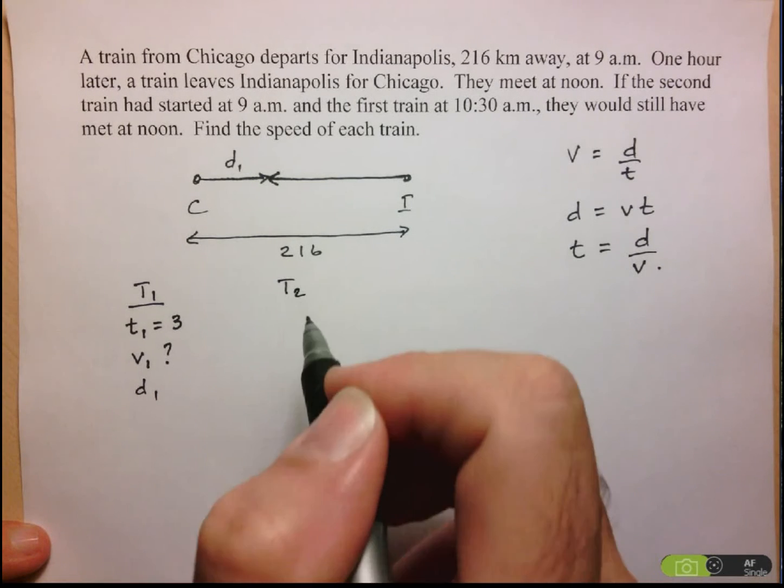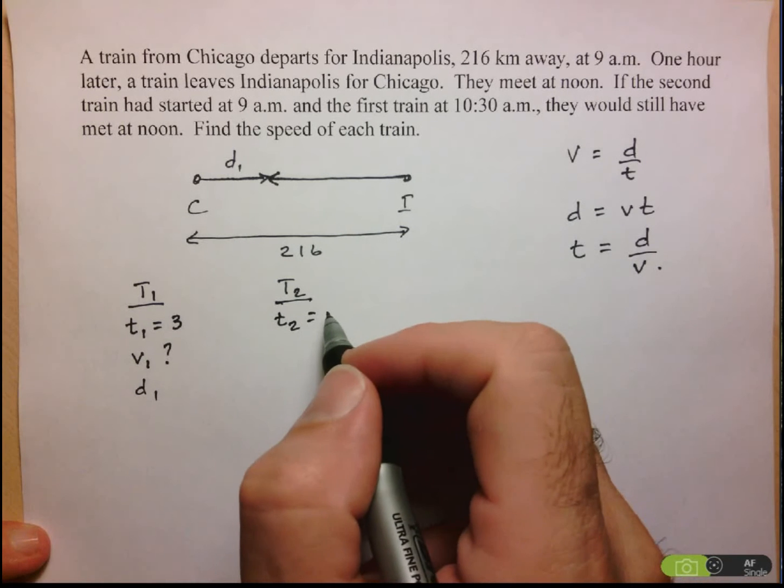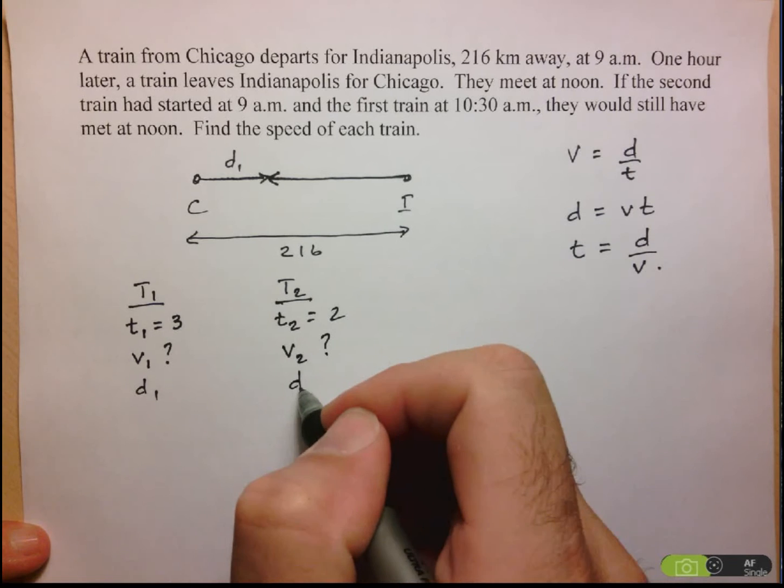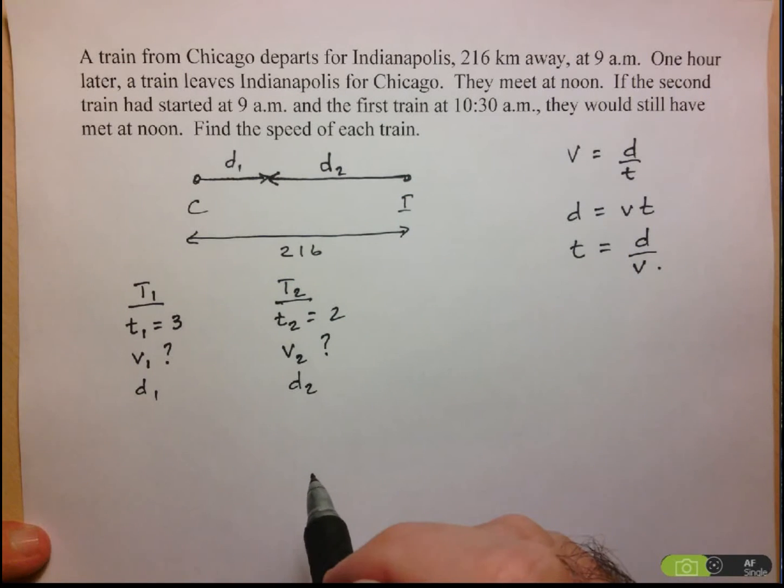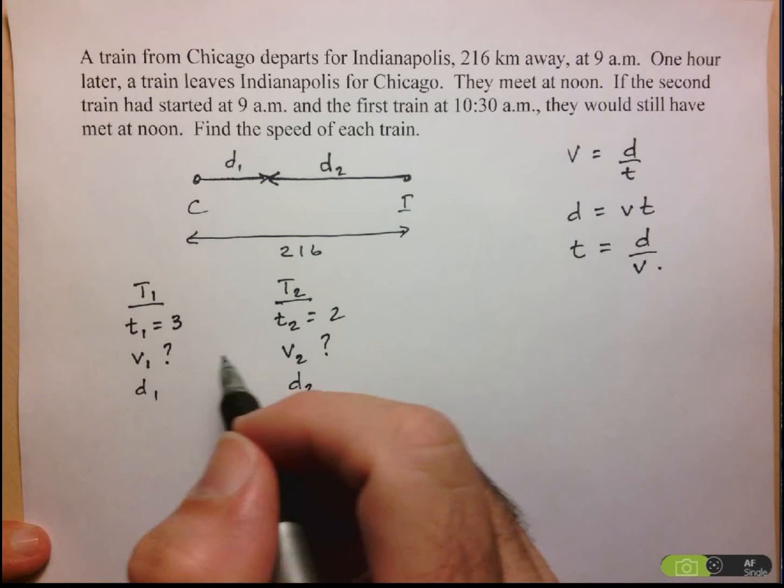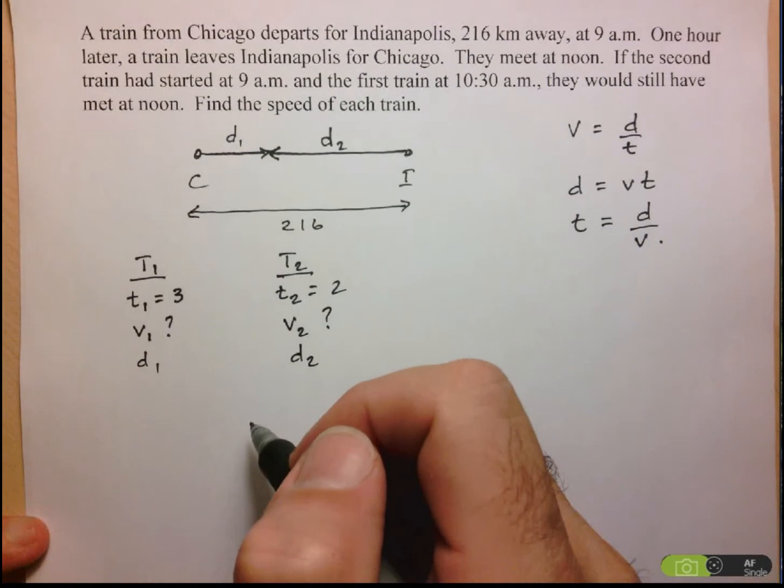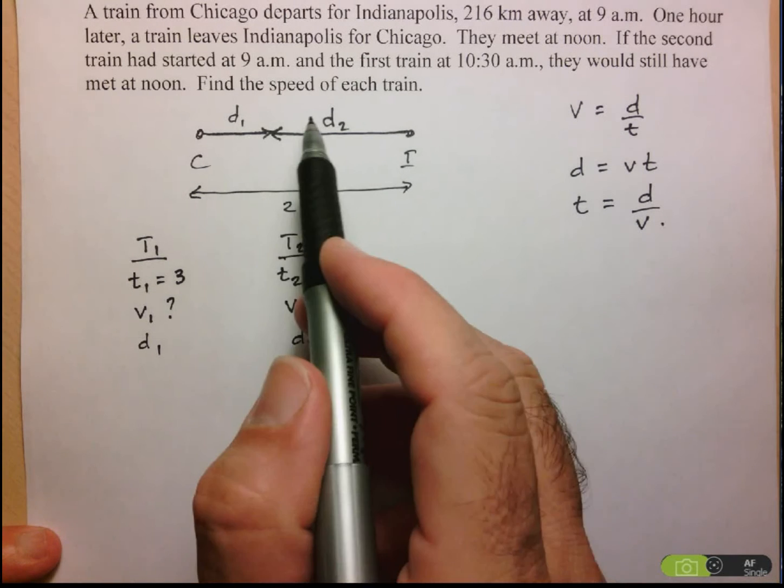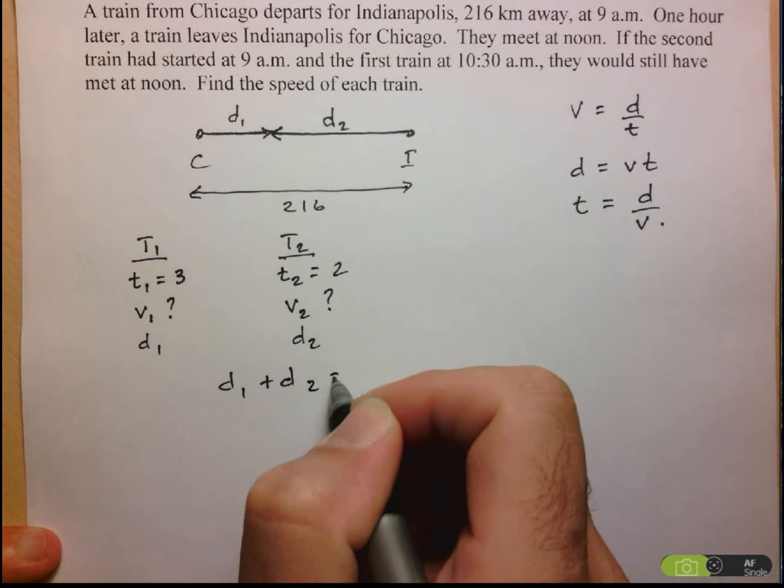Let's take a look at train 2. So it's going to be traveling for only 2 hours, since it leaves at 10, and they meet at noon. We're looking for the velocity. And again, the distance makes up the other portion of that 216 kilometers. Now, ideally, since my variables, which I'm looking for, are the speeds, I'm going to try to end up with an equation using those two variables. However, the relationship that I have is with the distances. I know that D1 plus D2 has to equal 216.